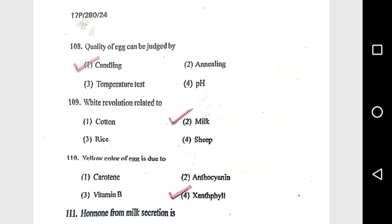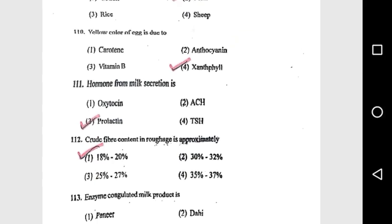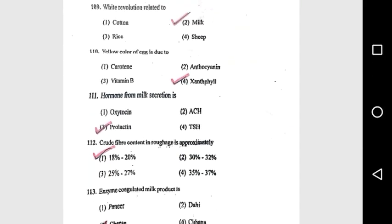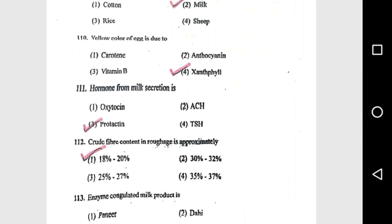Question 109: White revolution is related to milk. Question 110: Yellow color of egg yolk is due to xanthophyll. Question 111: Hormone responsible for milk secretion is prolactin.